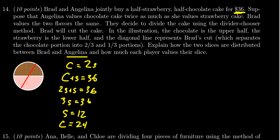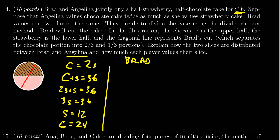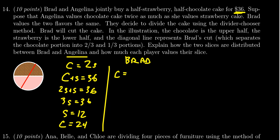Brad values the two flavors exactly the same. So this is like the Angelina side. If you look at the Brad side, his is much easier. The chocolate he values at $18 and the strawberry he values as $18 because he doesn't see a difference between the two flavors. So they're gonna divide the cake using the divider-chooser method.